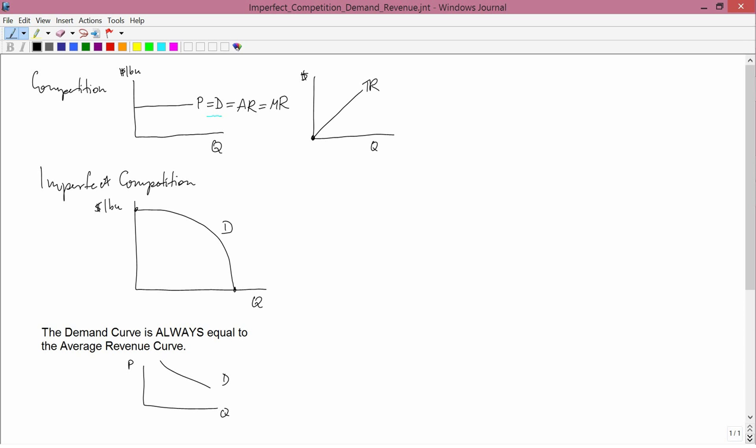So you've got some demand curve. And suppose that at a price of $2 a bushel, you're demanding 10 bushels. Let's work out total revenue. Well, total revenue is $2 a bushel times 10 bushels, so it's $20.